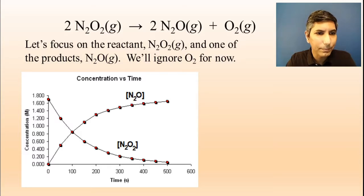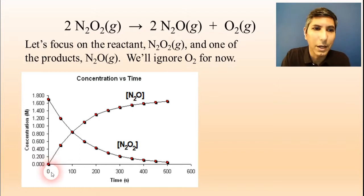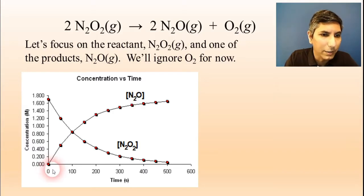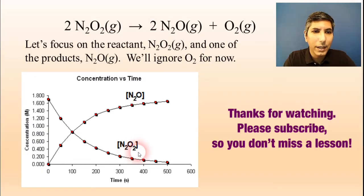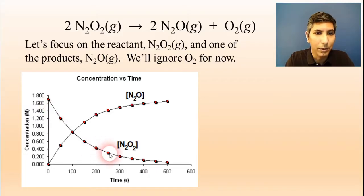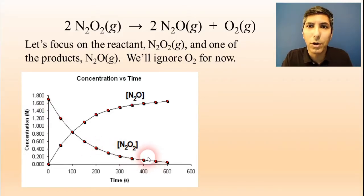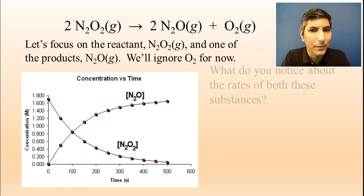Let's take a look at this graph — a graph of concentration as a function of time. Notice that the product N₂O starts out with a concentration of zero, which you would expect since it's a product. Then as the reaction proceeds, its concentration increases. And notice that the reactant N₂O₂ starts out at a fairly high concentration — looks like about 1.700 moles per liter — and then goes down as time goes on, which you would expect for a reactant.